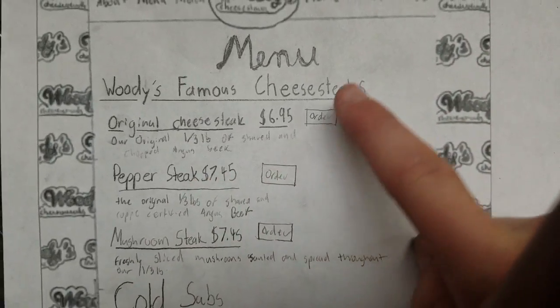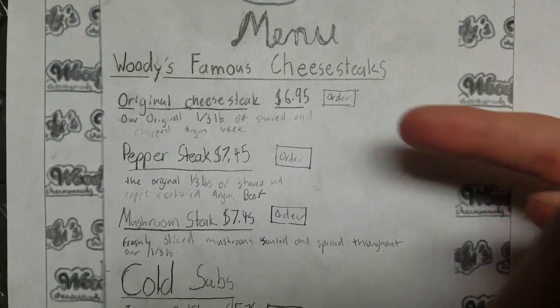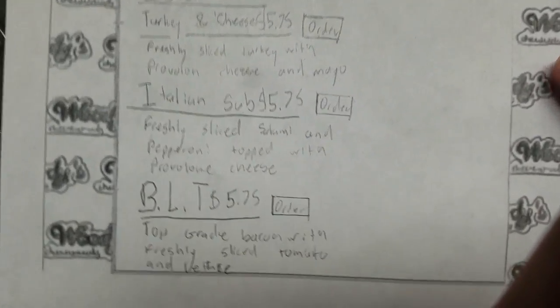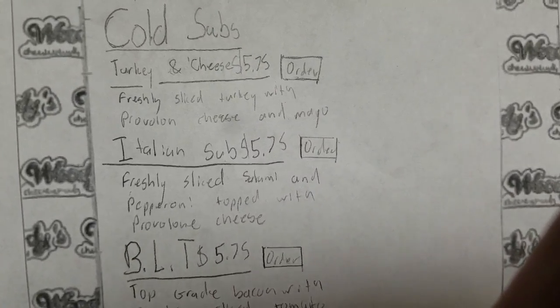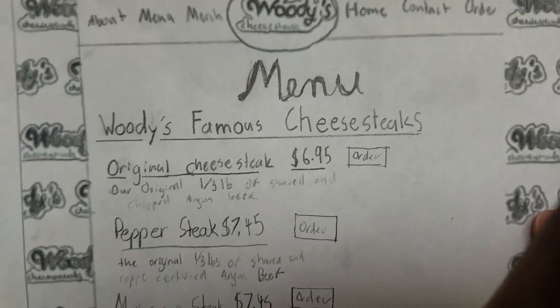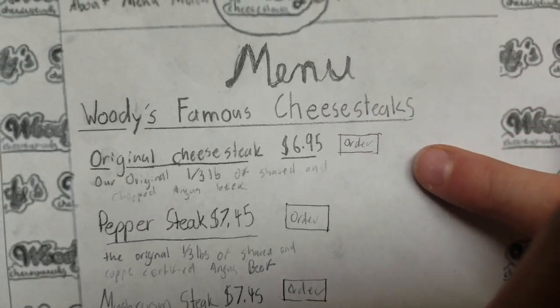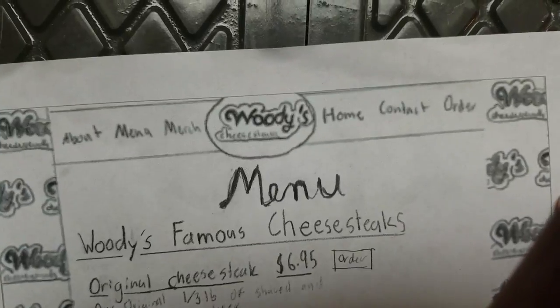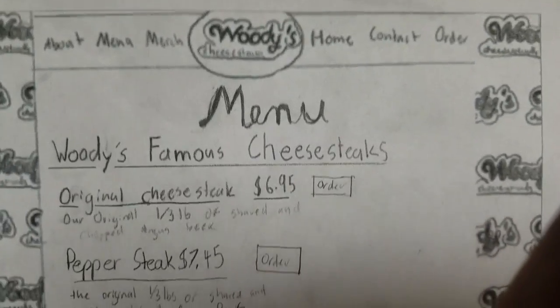Here are the cheesesteaks — original cheesesteak, pepper steak, mushroom steak. And here are the subs — turkey cheese, tie-in zone, BLT — with prices listed and an order button next to each. If you want to order a cheesesteak, just click on it, and it gets added to your cart, ready for you to confirm your purchase.